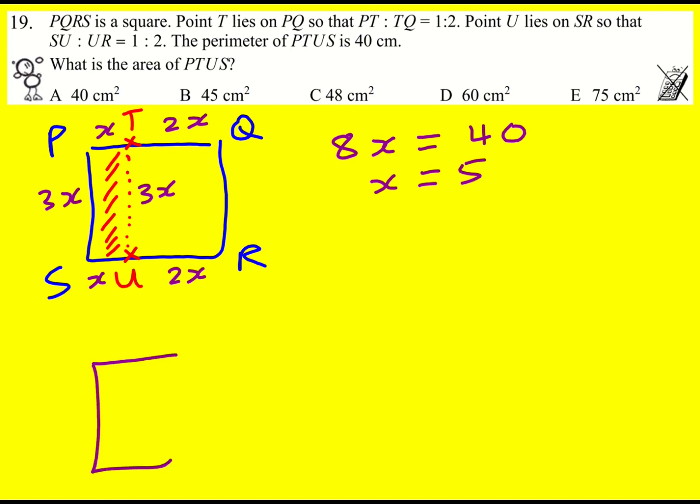And we're nearly there now. I'm just going to draw us out again. So I've got a rectangle which is 5 by 15. I'm asked for the area. It's going to be 5 times 15, which is 75.